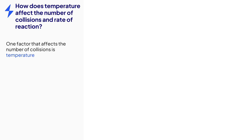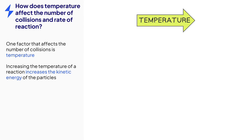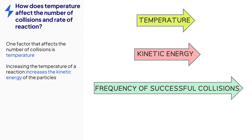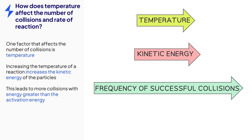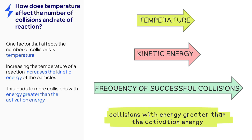Temperature affects the number of collisions and the rate of a chemical reaction. Increasing the temperature increases the kinetic energy of the particles, which means they move faster. This means that the frequency of successful collisions increases. When talking about temperature, a successful collision is one where the particles have more energy than the required activation energy. This idea of energy and activation energy is a key point for how temperature affects the number of collisions and rate of reaction.